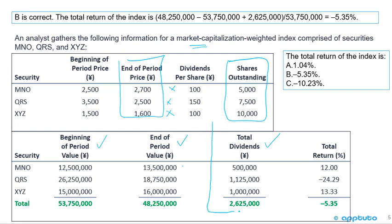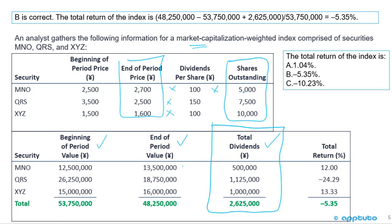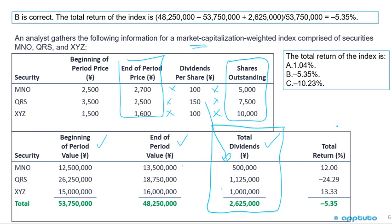Because this is total return on a market capitalization weighted index, we also need to calculate all the dividends. Shares times dividends: 5,000 times 100 is 500,000; 7,500 times 150 is 1,125,000; and 10,000 times 100 is 1,000,000. The formula is: ending minus beginning plus dividends, divided by beginning.